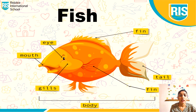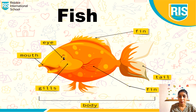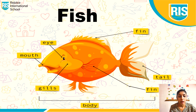As we have eyes, nose, and mouth, even a fish has two eyes to see, fins and a tail to swim, and a mouth to eat and take in oxygen and breathe out through gills.